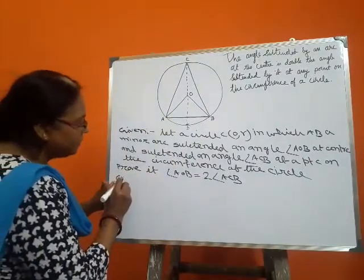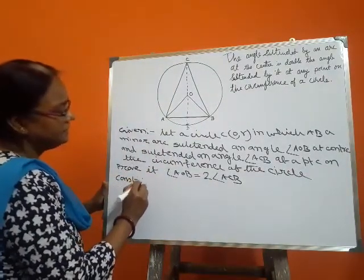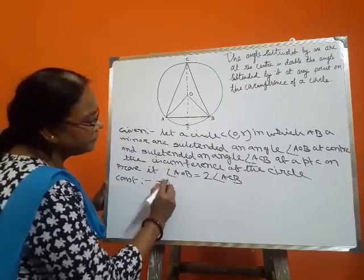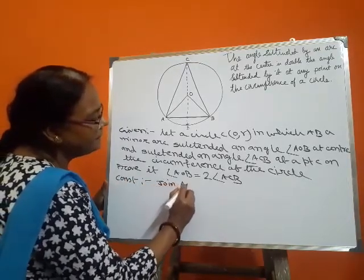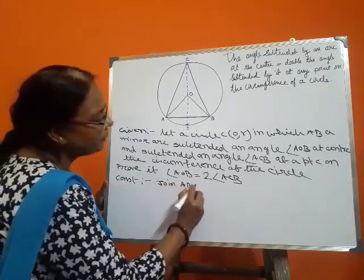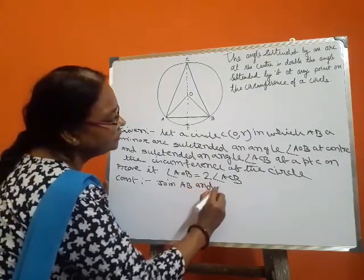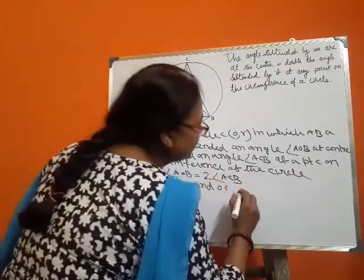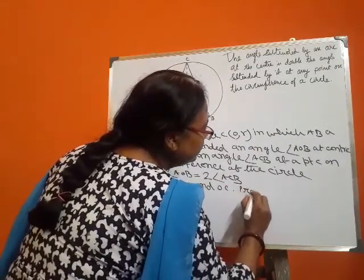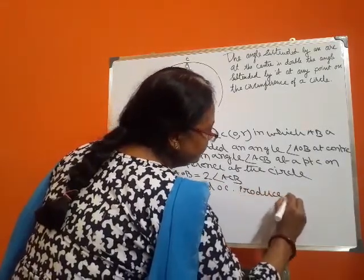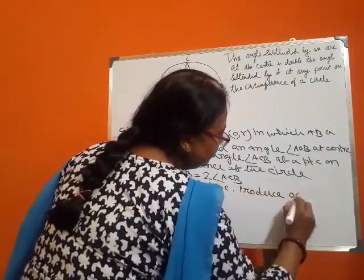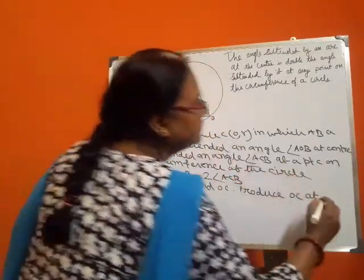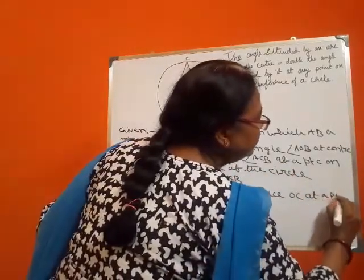Construction: join OC and produce OC to the point D.